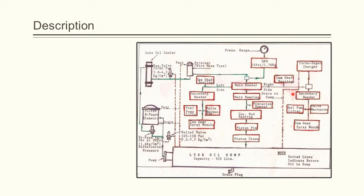The lubricating oil pump mounted on the free end of the engine draws the lubricating oil from the engine sump and discharges it into the system. The relief valve at the end of the discharge side of the pump protects the pump from high pressure and controls the discharge pressure at 135 to 140 psi by passing a portion of oil back to the sump.